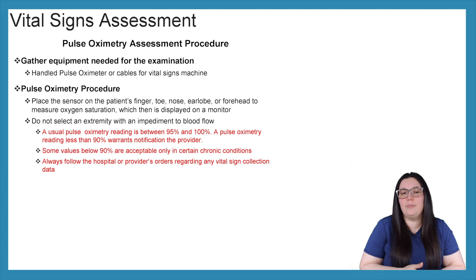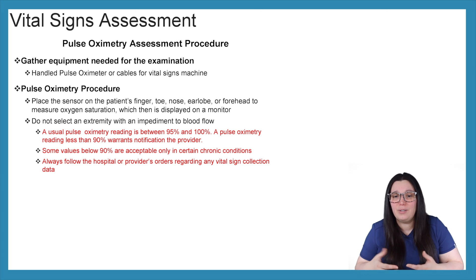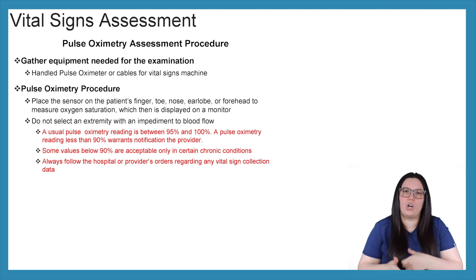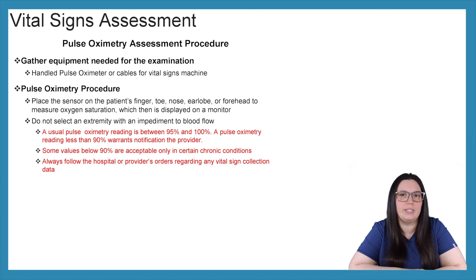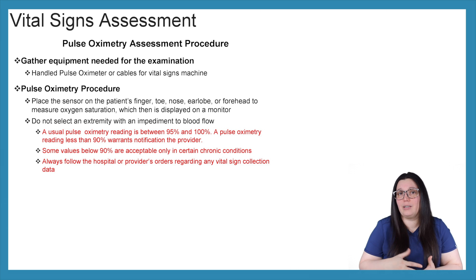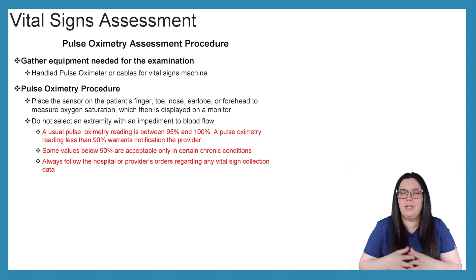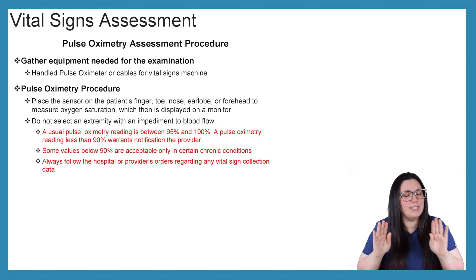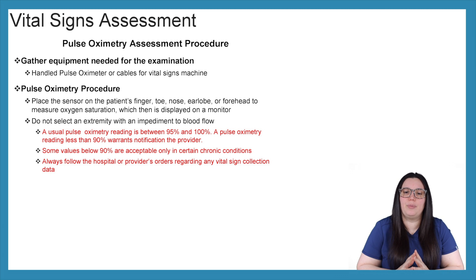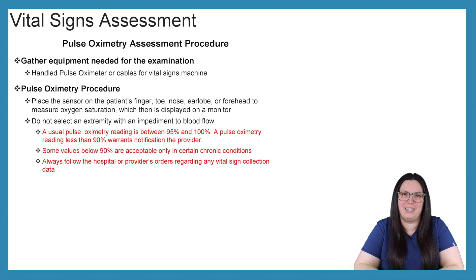Some values below 90 percent are acceptable only in certain chronic conditions. Sometimes your CHF or COPD patients are really problematic when it comes to their CO2 as well as their oximetry. That's something you need to discuss with the provider and your respiratory care team to determine what is normal and acceptable. As always, follow your hospital and provider's orders regarding vital signs collection for your patient population.